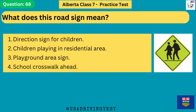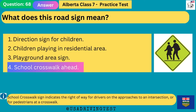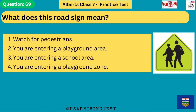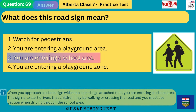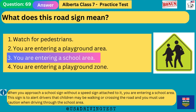What does this road sign mean? 1. Direction sign for children. 2. Children playing in residential area. 3. Playground area sign. 4. School crosswalk ahead. The answer is 4: school crosswalk ahead. School crosswalk sign indicates the right-of-way for drivers on the approaches to an intersection, or for pedestrians at a crosswalk. What does this road sign mean? 1. Watch for pedestrians. 2. You are entering a playground area. 3. You are entering a school area. 4. You are entering a playground zone. The answer is 3: you are entering a school area. When you approach a school sign without a speed sign attached, you are entering a school area — be cautious as children may be walking or crossing the road.